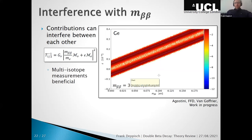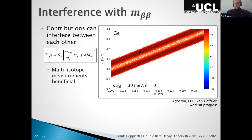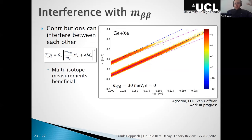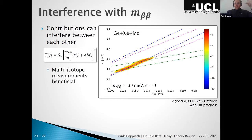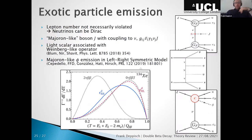If neutrinoless double beta decay were measured in multiple isotopes, you get more information. Plotting m_ββ on the horizontal axis and ε on the vertical axis, with true input values of 30 meV for m_ββ and ε set to zero: measuring one isotope gives a band; two isotopes gives some restriction, but xenon and germanium have similar matrix elements so the constraint is limited; adding molybdenum, whose matrix element dependence differs, reduces the parameter space much more severely. Measuring in all three isotopes gives a much more constrained parameter space.